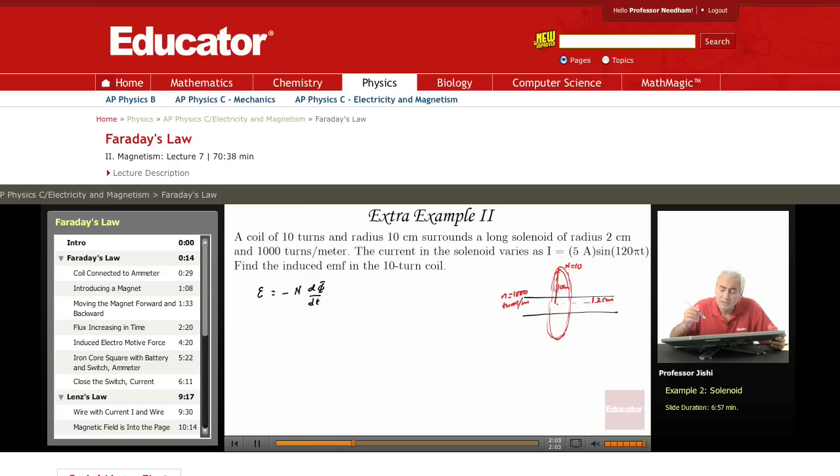The magnetic field is inside the solenoid. The solenoid has a current I. It has number of turns per meter n.